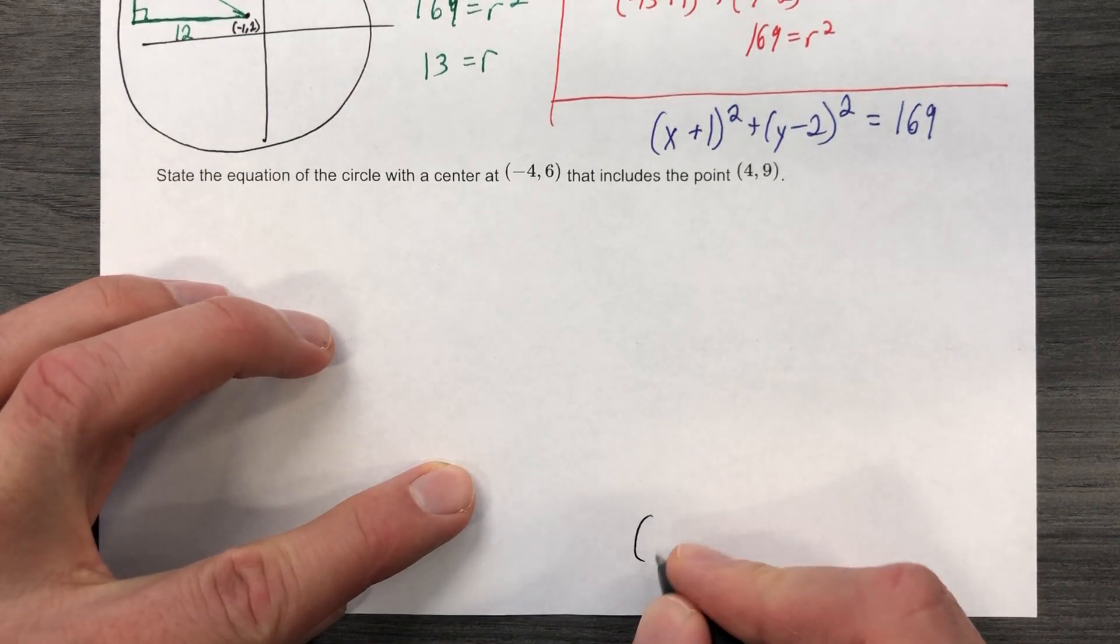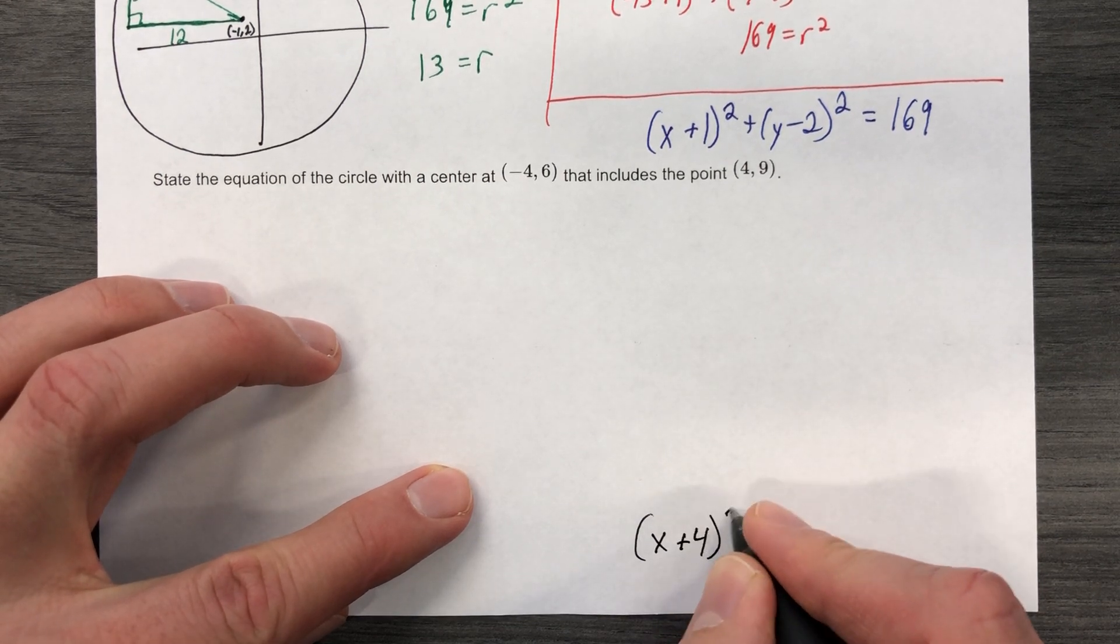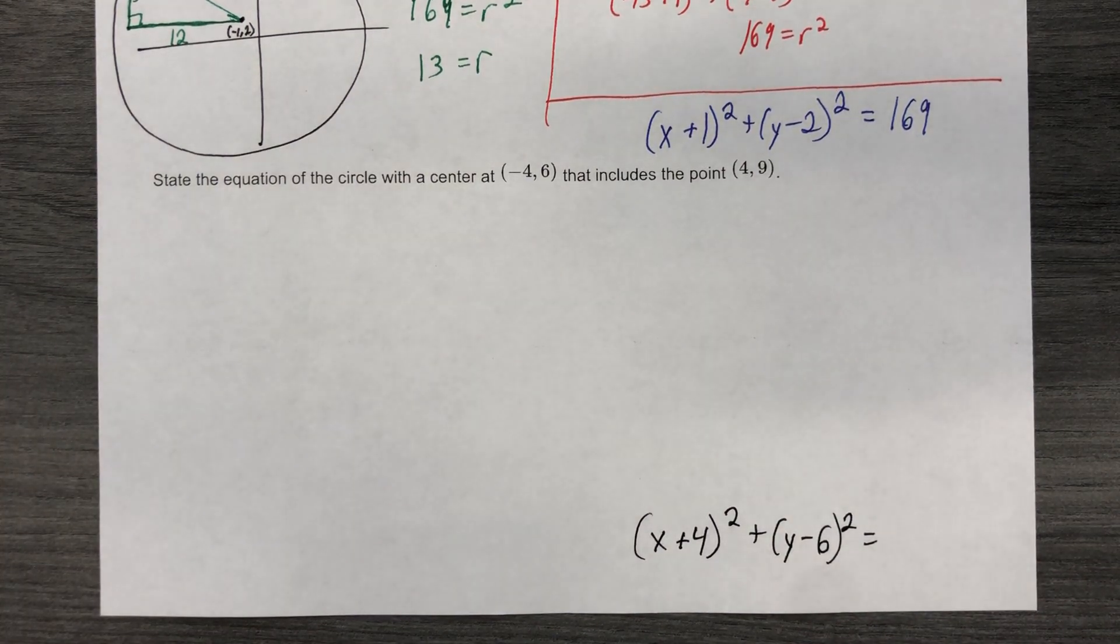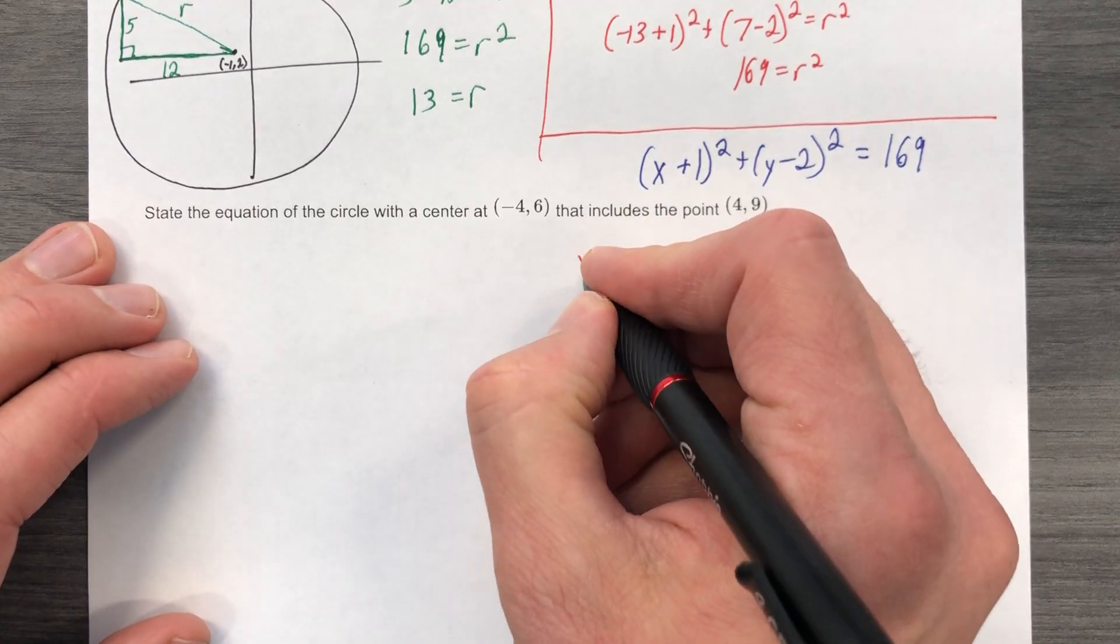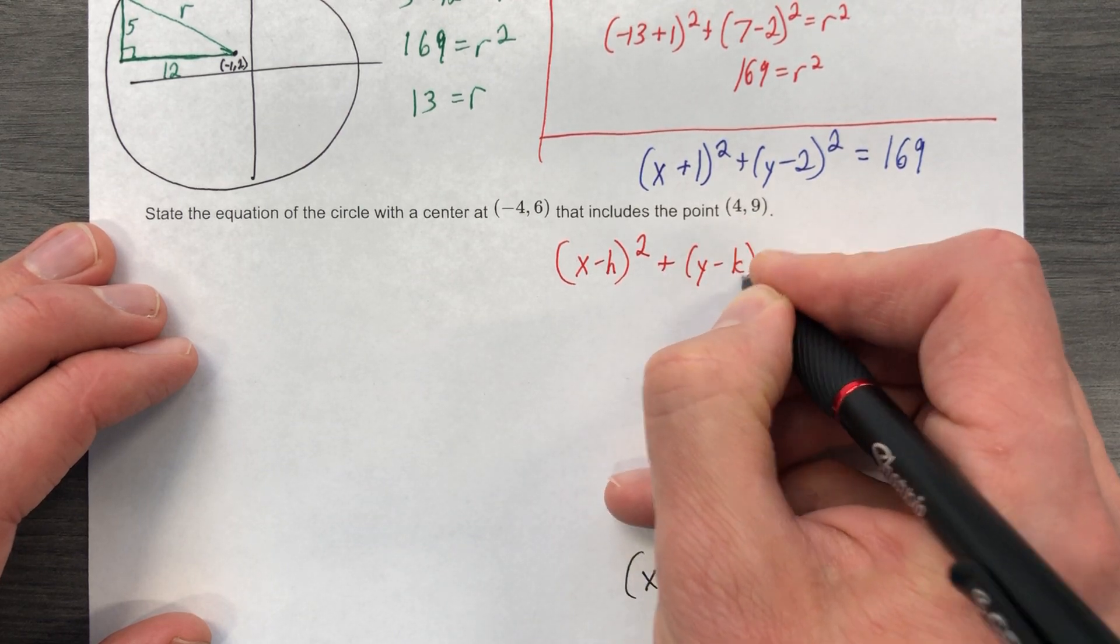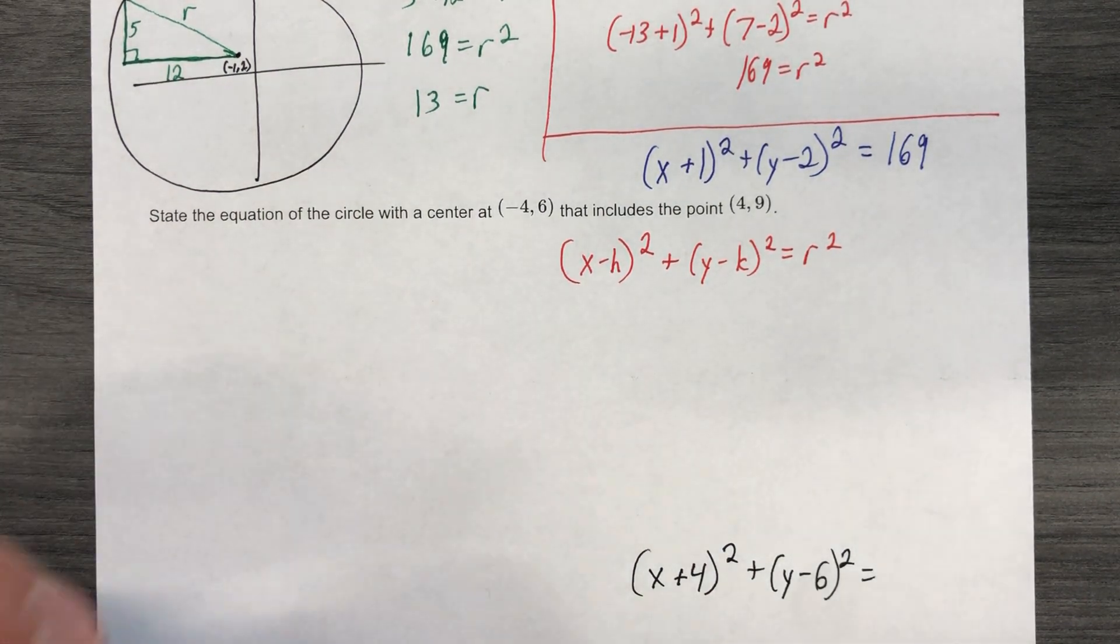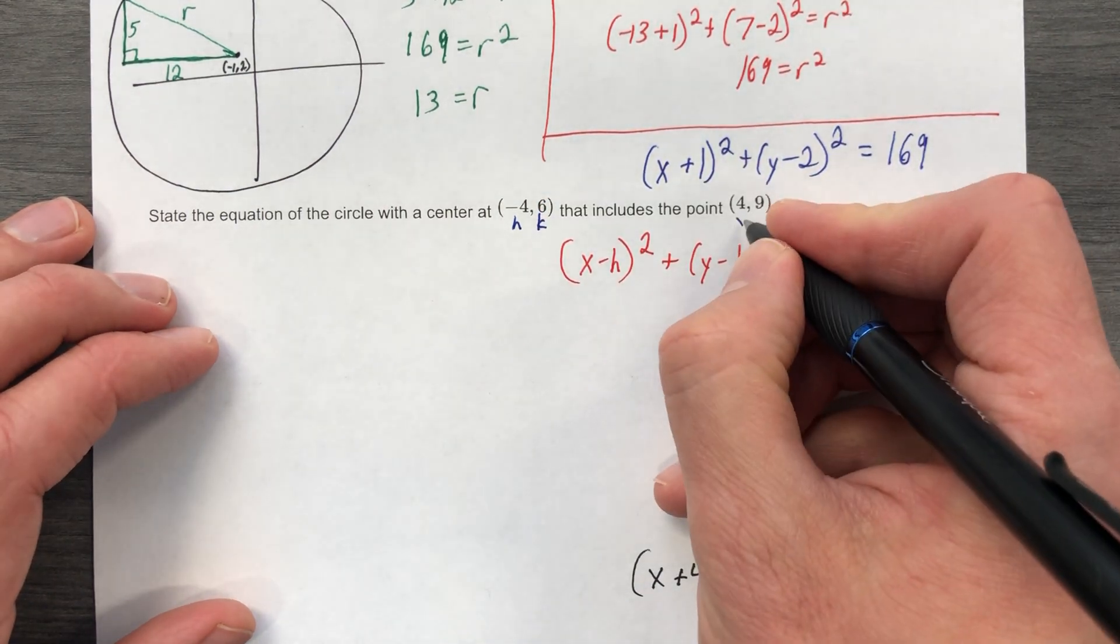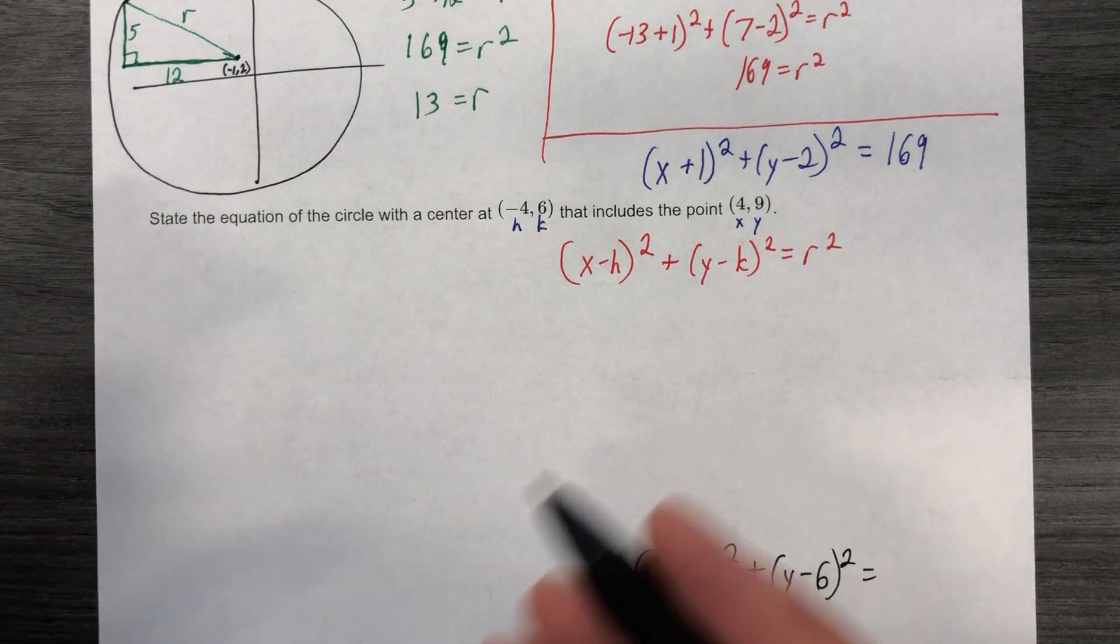State the equation of a circle with a center at (-4, 6). I've already got part of my answer, and I'm writing it in the wrong color. We'll be all right. Equals something that I don't know. Let's use this method first. Writing the formula or not, it never hurts to write it unless you're out of ink or if your finger's wounded or something. Knowing that this is h, this is k, because it's the center, this is an x, and this is a y, because it's just a point on the circle. It could be anywhere.